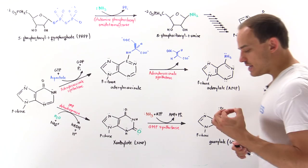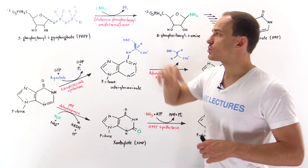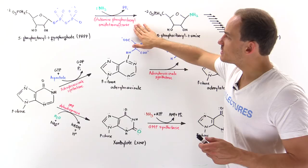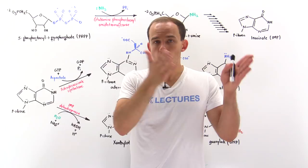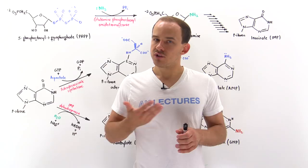We begin with PRPP, 5-phosphoribosyl-1-pyrophosphate, this sugar molecule shown on the board. The first step is catalyzed by an enzyme known as glutamine phosphoribosyl amidotransferase. This enzyme actually contains two active sites and two domains. One of the domains contains an active site for the PRPP. The other domain contains an active site for glutamine.